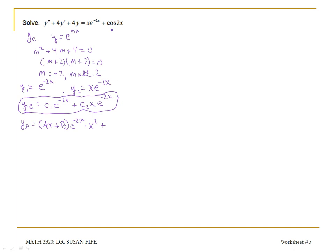And then I need terms to cancel out this cosine of 2x. To cancel out a cosine of 2x, I'm going to need both a cosine of 2x and a sine of 2x. I want to take this particular solution and substitute it into the original differential equation, and then solve for my coefficients a, b, c, and d.